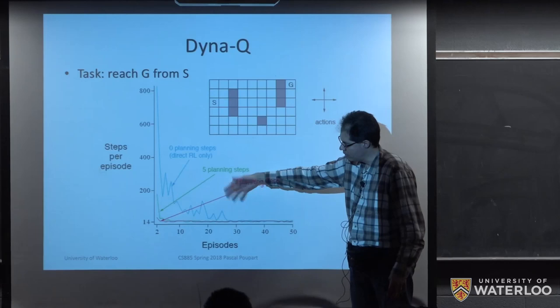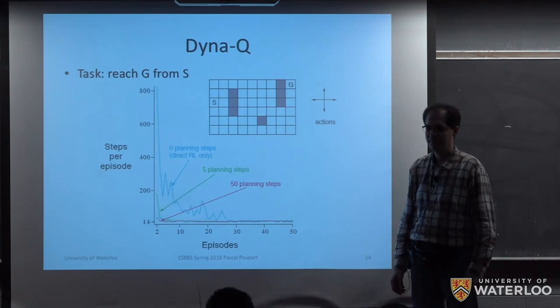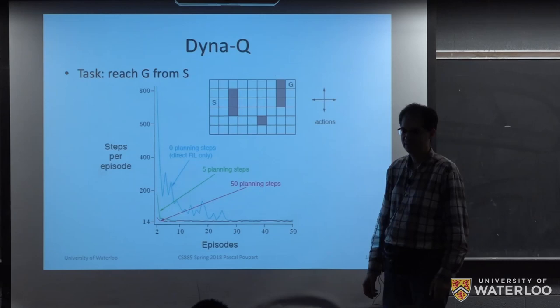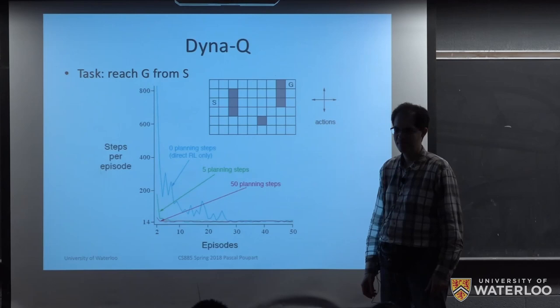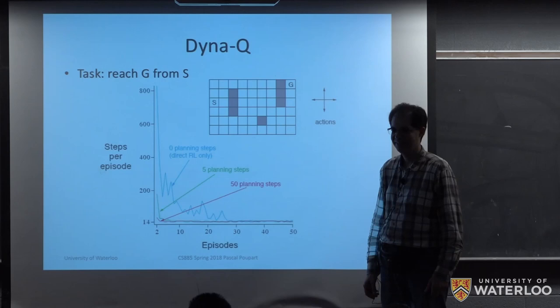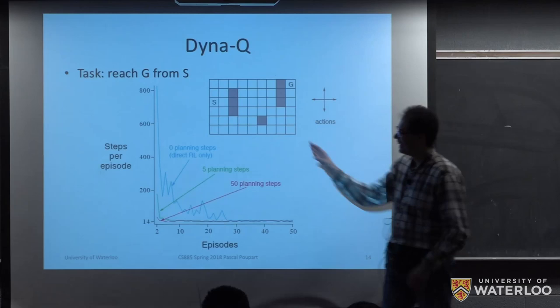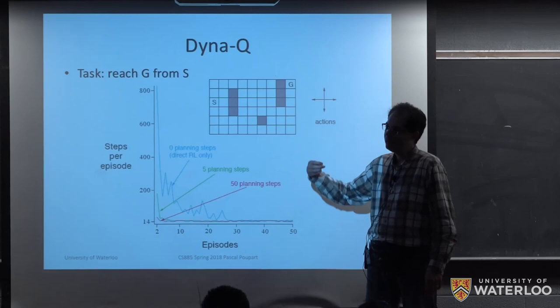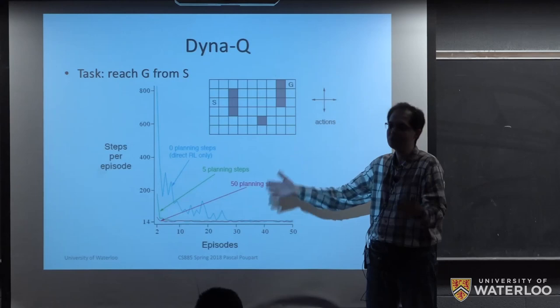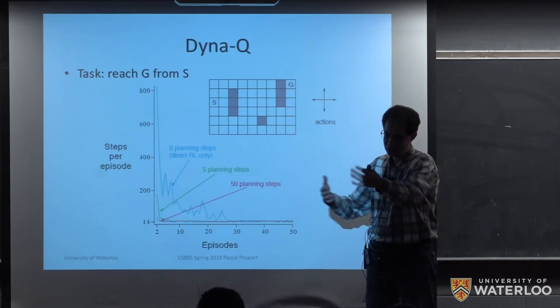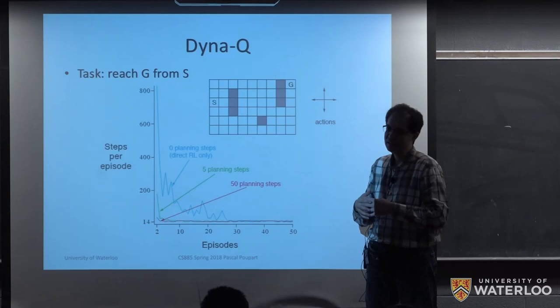A student asks whether using a Gaussian process to maintain a measure of uncertainty for each state-action pair would help with the inaccurate model problem. The instructor confirms this is correct — one lecture ahead, in fact. Rather than committing to a particular model, we should model the uncertainty about things we're unsure of, and a Gaussian process is one way of doing this, which can greatly mitigate bias from an inaccurate model.